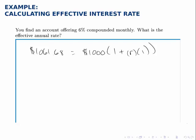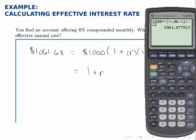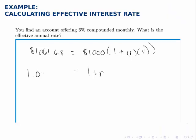If I'm solving for R, I need to divide both sides by $1,000, and then I'll have in parentheses 1 plus R, and $1,061.68 divided by $1,000 is 1.06168. To solve for R, I subtract 1 from both sides and find that 0.06168 equals R.